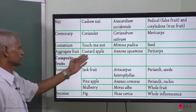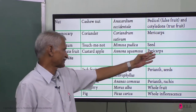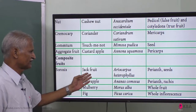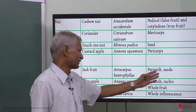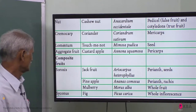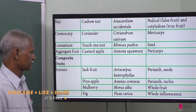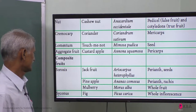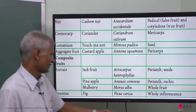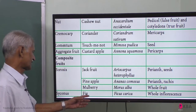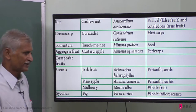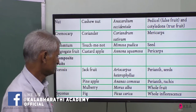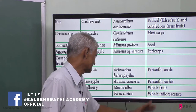For aggregate fruit — custard apple — the pericarp is edible. For composite fruit — sorosis — jackfruit: the perianth and seeds are edible. For pineapple: the perianth and seeds are edible. For mulberry: the whole fruit is edible. For syconus — fig — the whole inflorescence is edible.